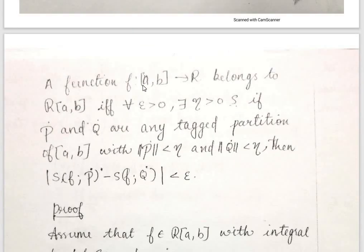Statement: a function f from [a,b] to ℝ belongs to R[a,b] — that is, f is Riemann Integrable — if and only if for every epsilon greater than 0, there exists eta greater than 0 such that if P-dot and Q-dot are any two tagged partitions of [a,b] with norm of P less than eta and norm of Q less than eta, then |S(P-dot) − S(Q-dot)| < epsilon.